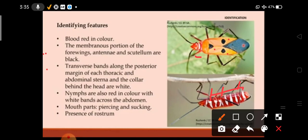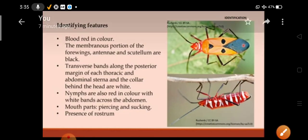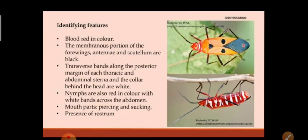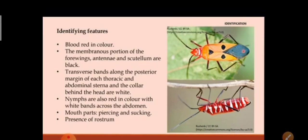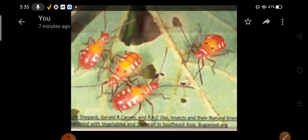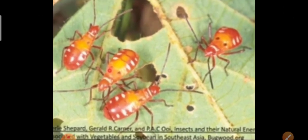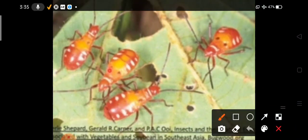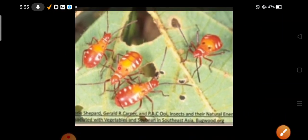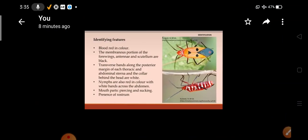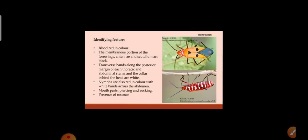Nymphs are also red in color with white bands across the abdomen. You can see these are the nymphs — also red in color with white bands present. Mouthparts are piercing and sucking type with the presence of a rostrum.